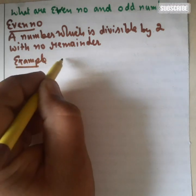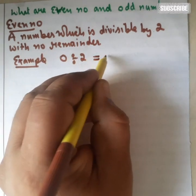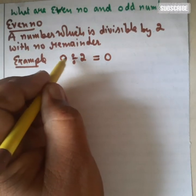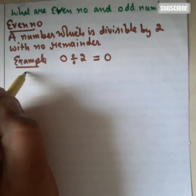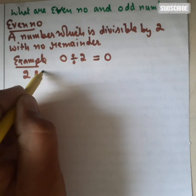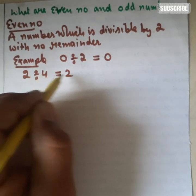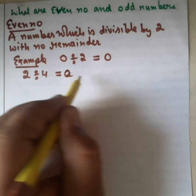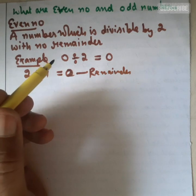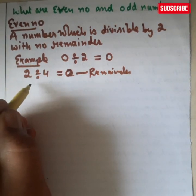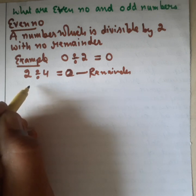For example, let us consider zero. When we divide zero by two we get zero remainder. Similarly, if we divide two by two we get remainder zero. Whenever you divide such numbers by two and you get remainder zero, you can say that number is even.